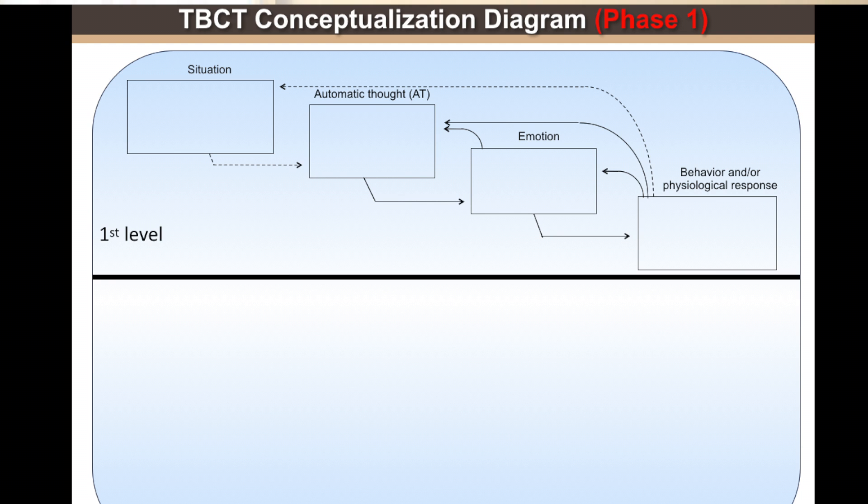This vicious circle is what makes it possible to understand the confirmatory bias. That is, if one predicts something bad will happen, the emotion and behavior will go in that direction and will eventually provoke a new unpleasant situation that closes the cycle. This prevents the patient from evaluating the initial situation and, consequently, changing the misperceptions about it and what it triggers as a consequence.